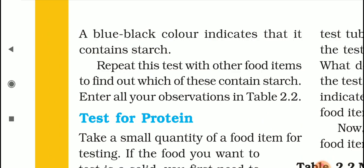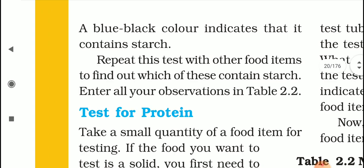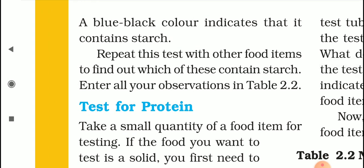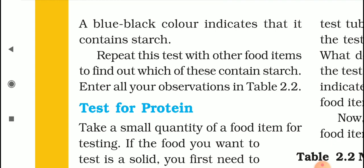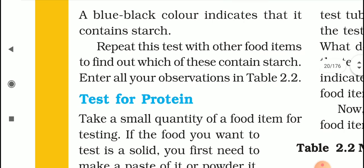A blue-black colour indicates that the food item contains starch. Repeat this test with other food items to find out which of them contains starch, and enter all your observations in table 2.2. To summarise: take a sample of food, put 2–3 drops of iodine solution on it. If it turns blue-black, it shows the presence of carbohydrate or starch. If it does not turn blue-black, the food item does not contain carbohydrate.